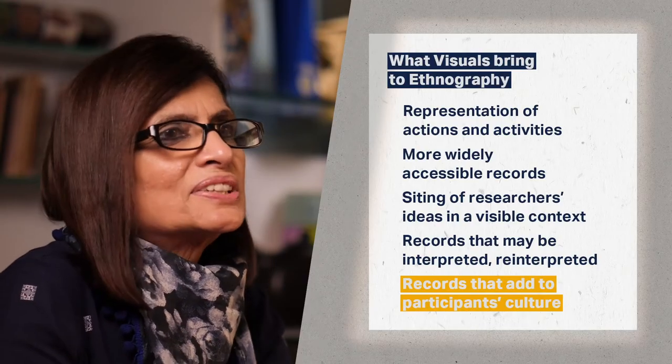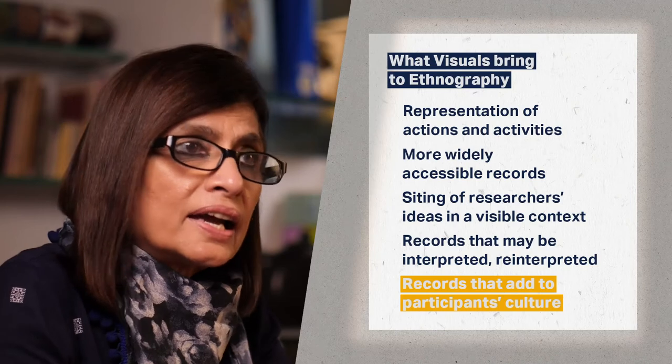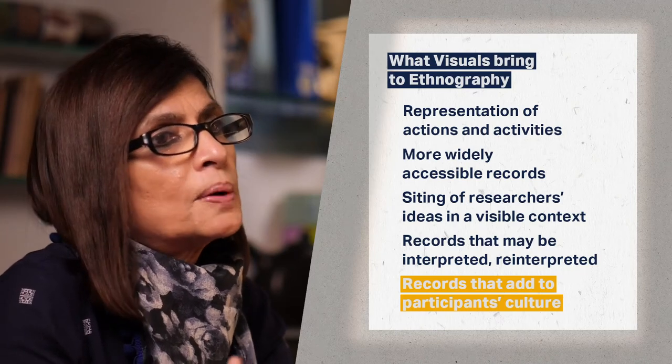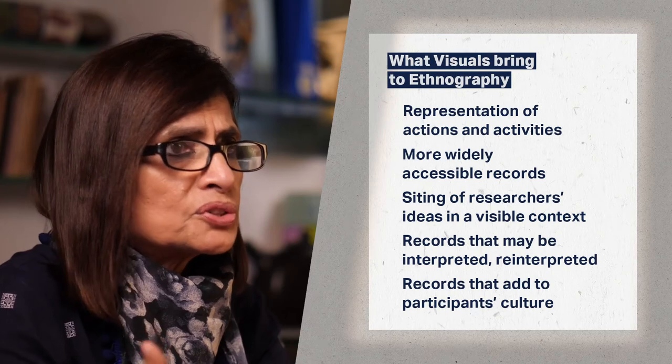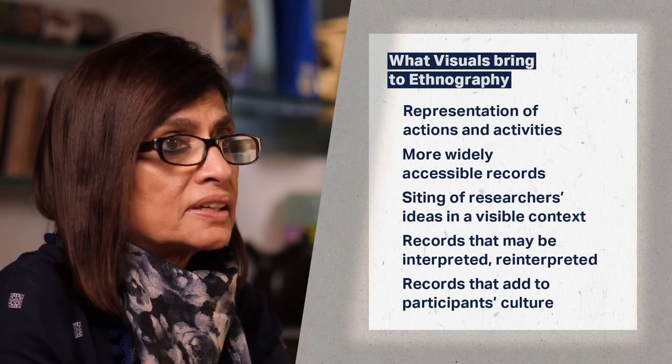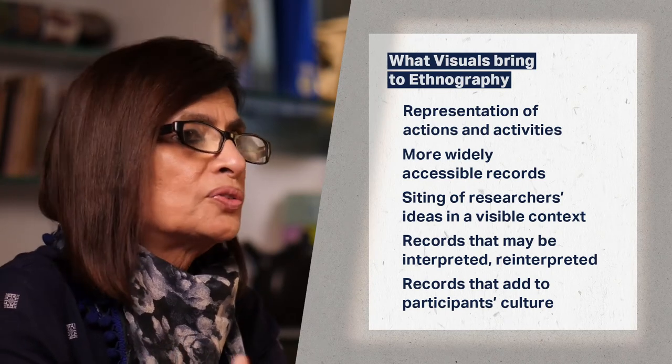Visual ethnographies or the records created in the process are quite likely to become a part of the participants' visual culture. For instance, images we make of our participants may be appreciated by them as portraits or memorabilia of their own lives. Films made as collaborations between participants and researchers often become a way for participants to represent themselves. In all of these ways, visual ethnography offers us not only new routes to knowledge we may have accessed in other ways, but new forms of knowledge altogether.